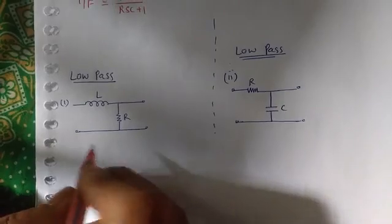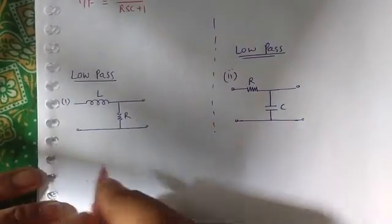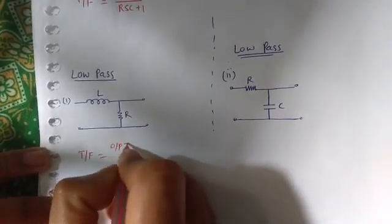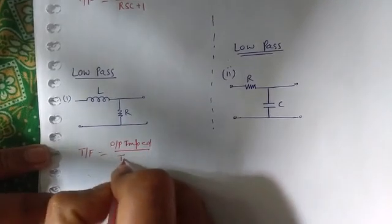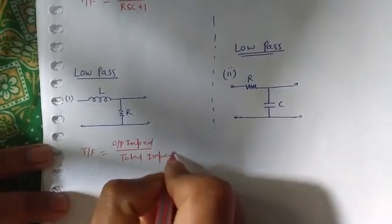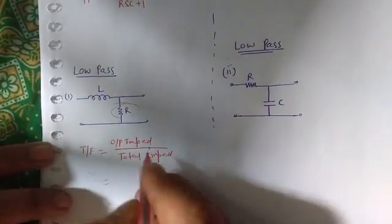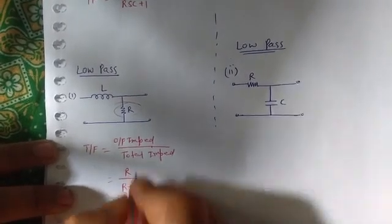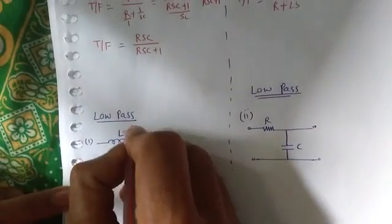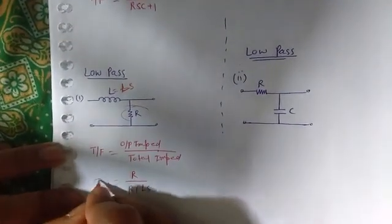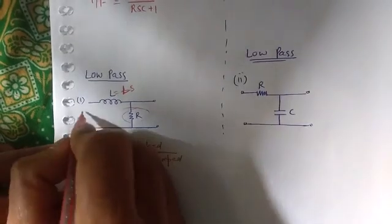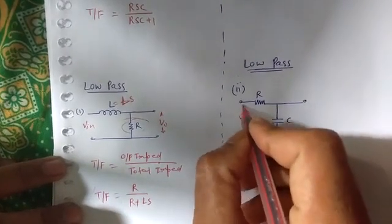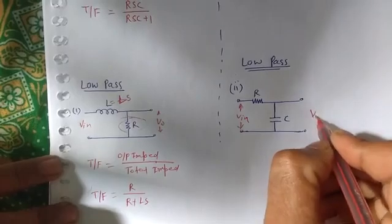Now this is a low pass filter. We will quickly write its transfer function as output impedance upon total impedance. The output impedance is R. We replace L by LS, so the total impedance is R plus LS. Therefore the transfer function is R upon R plus LS. Here we have input voltage on one side and output voltage on the other.